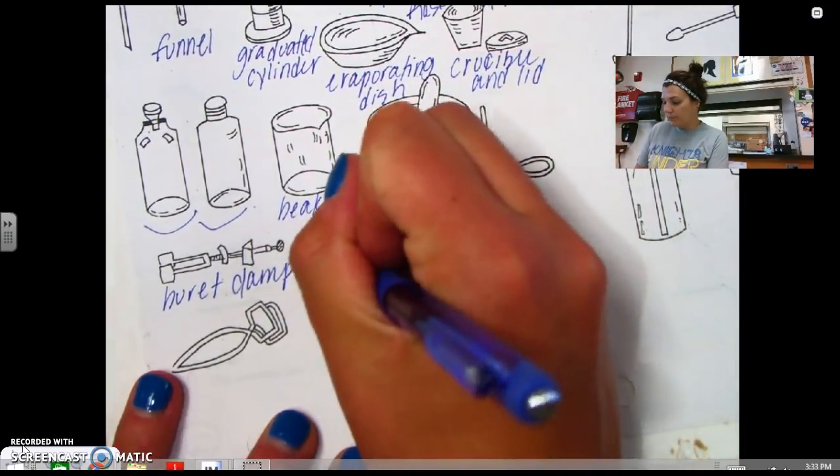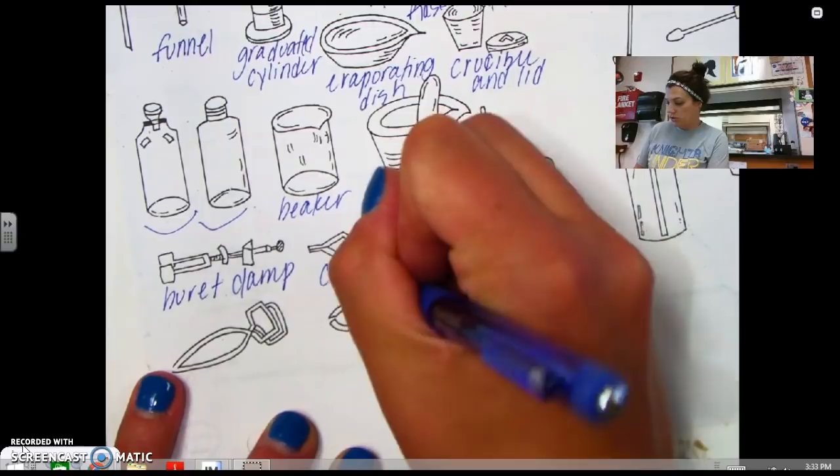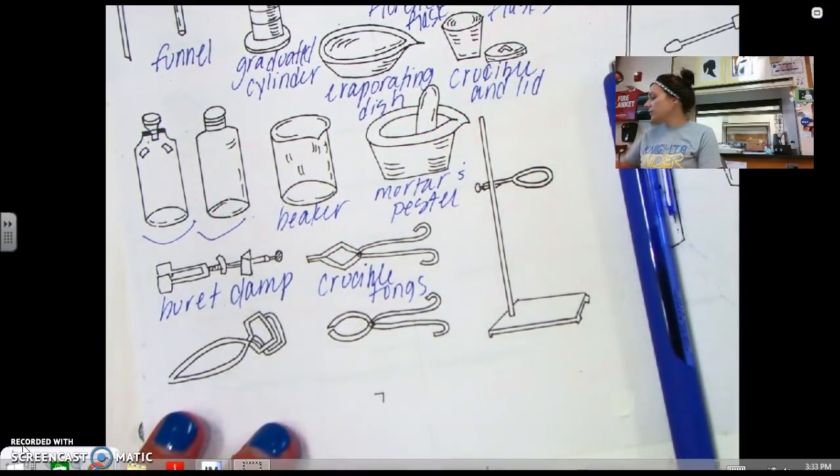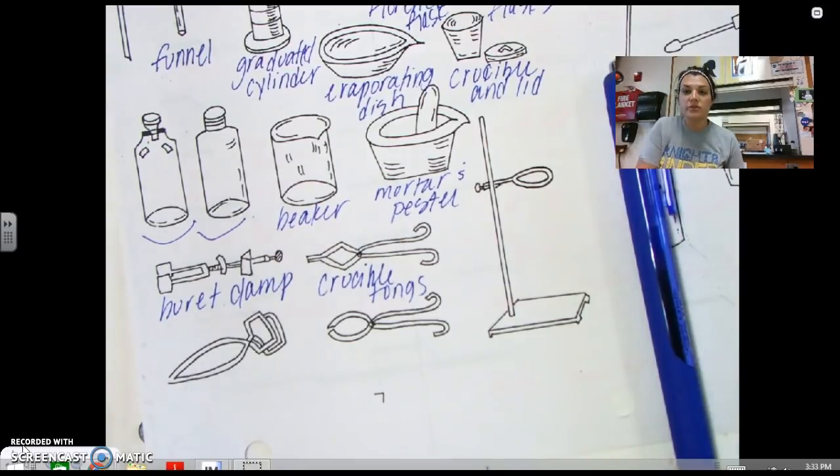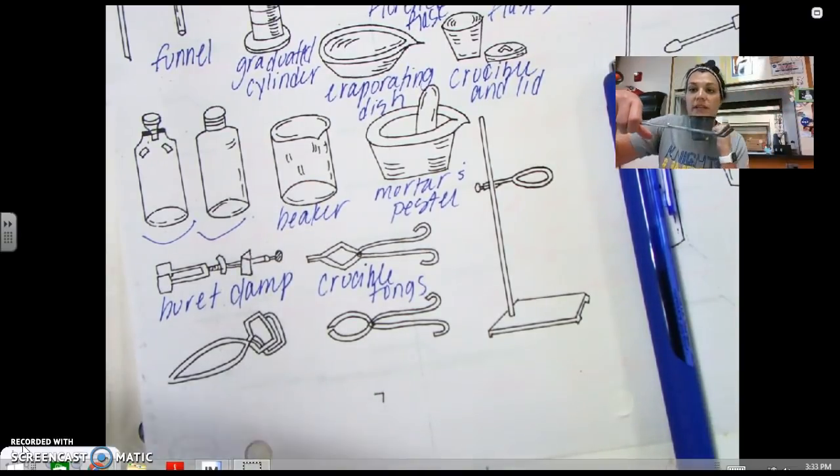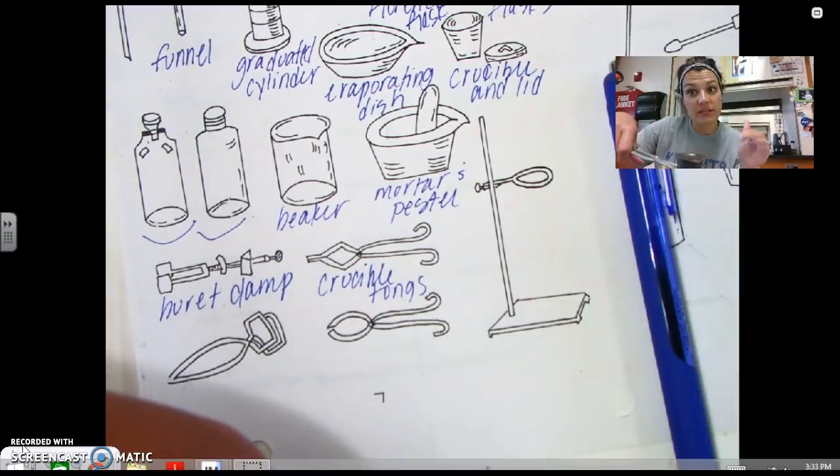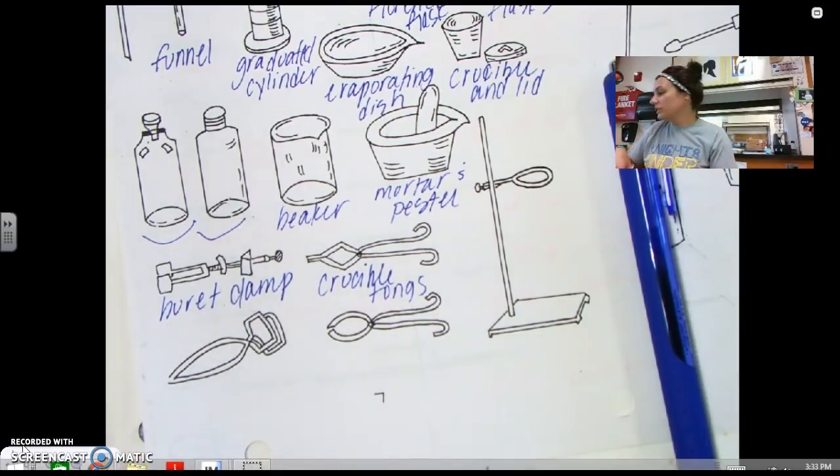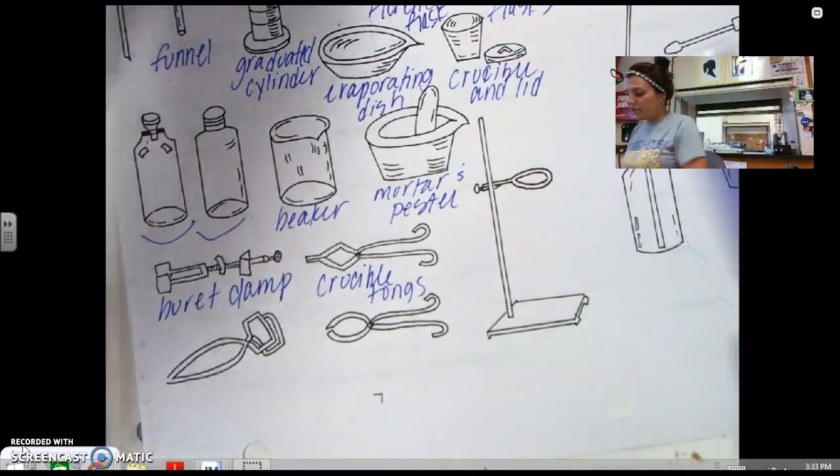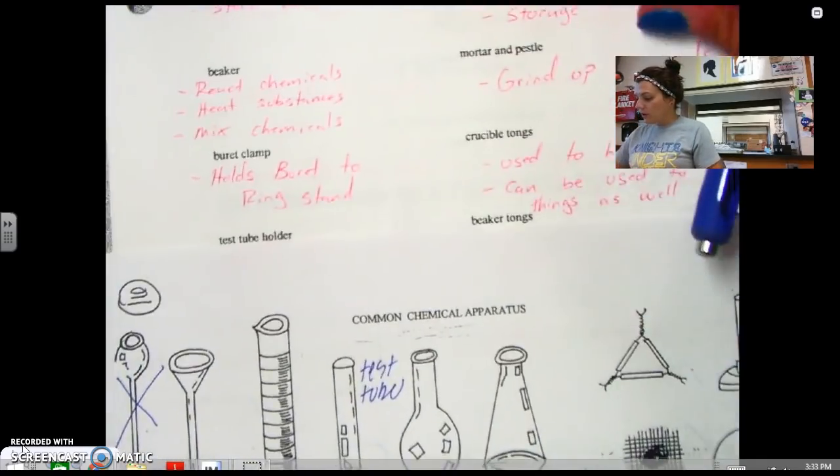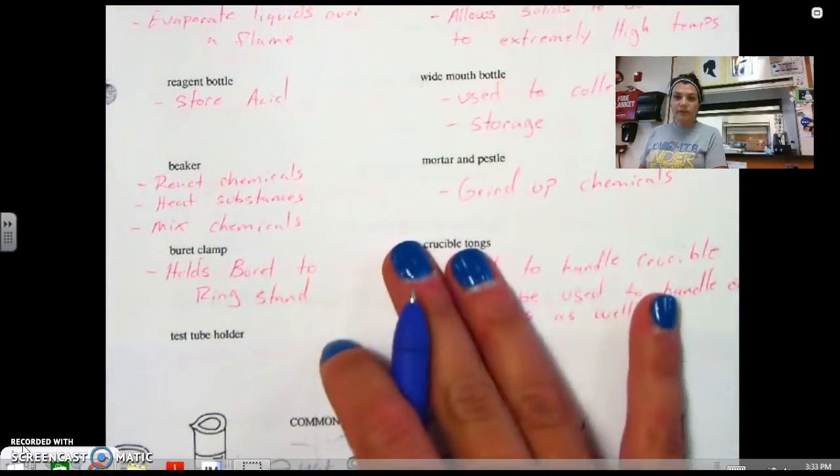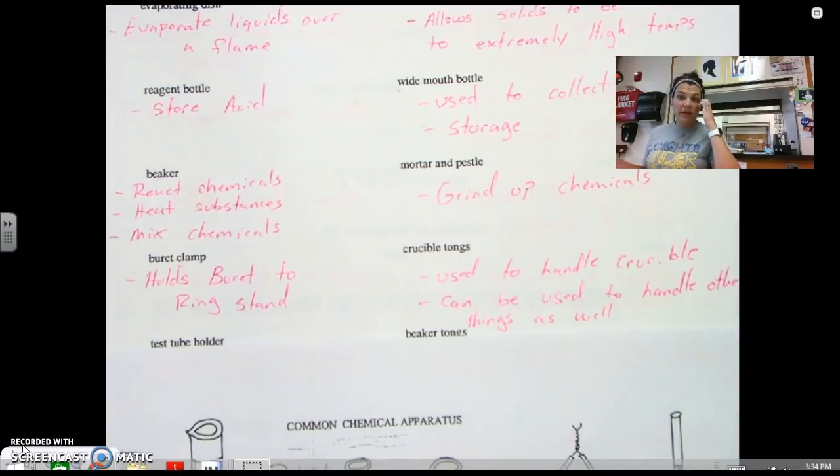The next thing is crucible tongs. Now crucible tongs, we talked about the crucible before. Crucible tongs aren't just regular tongs. So crucible tongs have that, it's like a little diamond. And it's perfect because what can happen is it can hold our crucible because remember what we use a crucible for is to heat things up. So when I take it away from the heat, I definitely don't want to touch it because it's metal and it'll be hot. So we'll need to use crucible tongs for that. So obviously crucible tongs are used to handle crucibles. And it can also be used to handle other things, but we tend to only use it to handle crucibles.